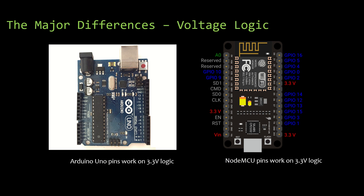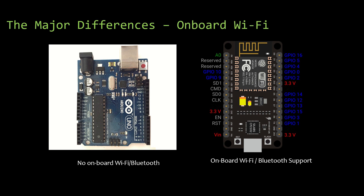The next difference is voltage logic. Arduino UNO pins always work on 3.3V logic, and NodeMCU also follows the 3.3V logic, so there is no major difference in this aspect.